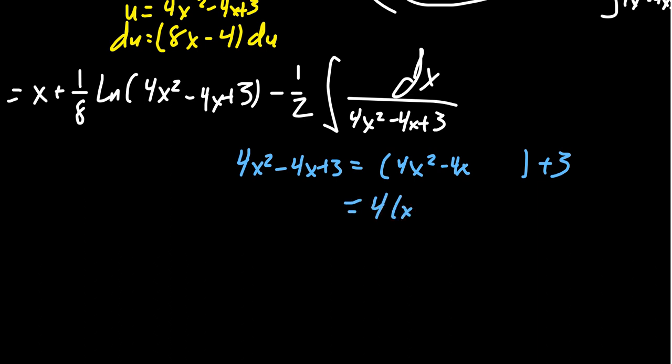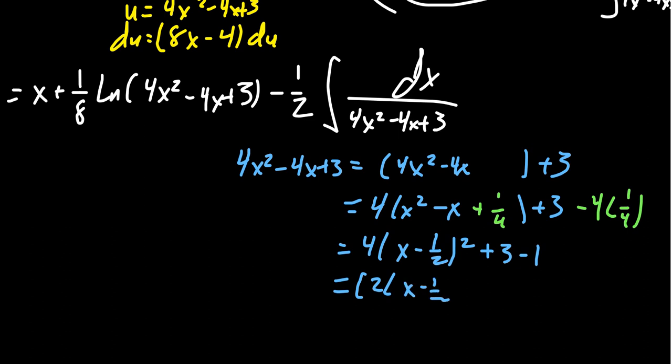And so if you have this 4x squared minus 4x plus 3, to complete the square, we're going to separate the x's from the constants. So we get 4 times x squared minus x plus 3. Taking half of the middle term, which is itself 1/2, you're going to square that to give you 1/4. So we have to subtract 4 times 1/4 to compensate for that. That gives us 4 times (x minus 1/2) squared plus 3 minus 1, which is 2.